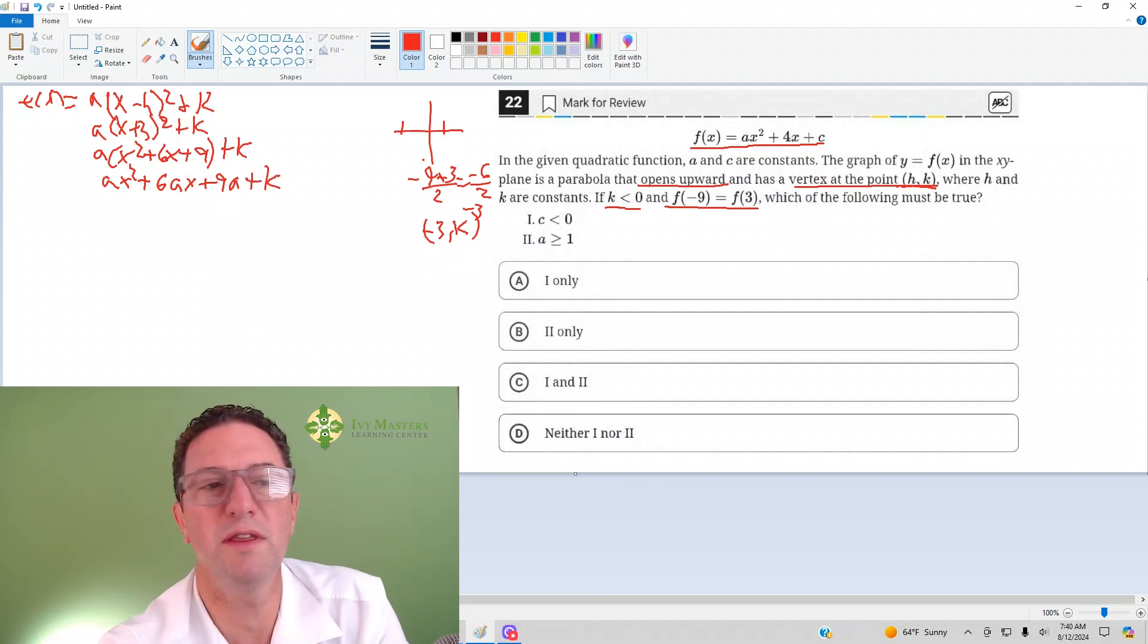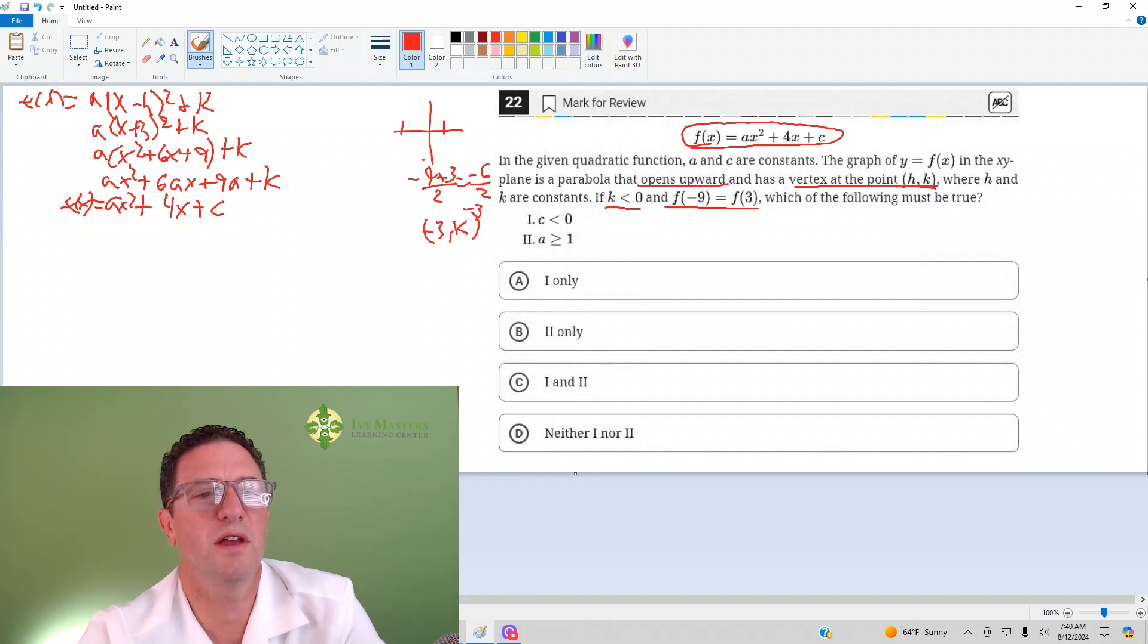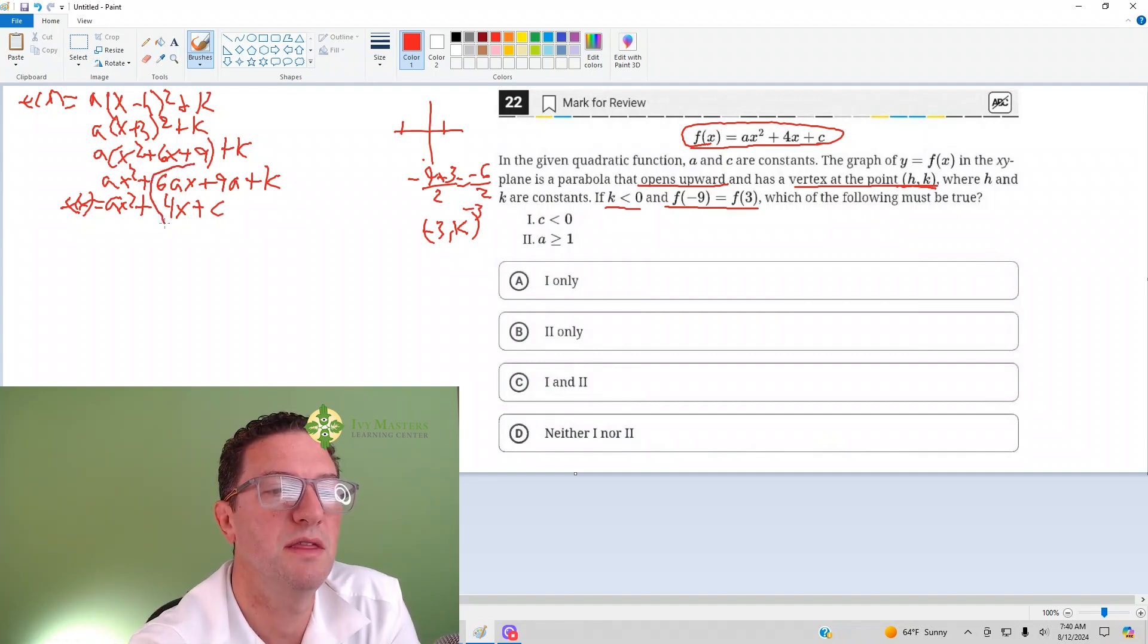Now I'm going to write the function we have underneath, and you're going to see how it corresponds. So f(x) = ax² + 4x + c. Whenever you see things that correspond, you want to set the corresponding parts equal. The ax² equals ax² doesn't help, but the middle part helps: 6ax = 4x. And c corresponds to anything without x, so 9a + k = c.